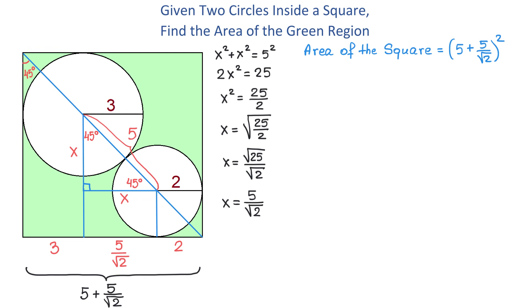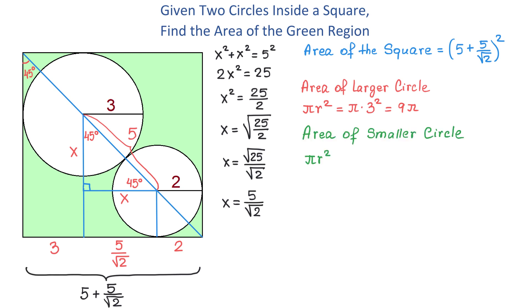Next, let's write the area of each of these circles. The formula for the area of a circle is pi r squared, where r represents the radius. For the larger circle, we replace r with 3, giving pi times 3 squared, which is 9 pi. For the smaller circle, we replace r with 2, giving pi times 2 squared, or 4 pi.